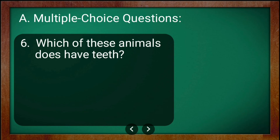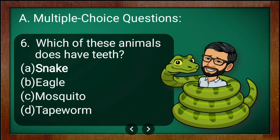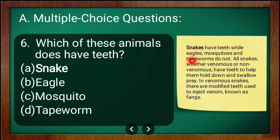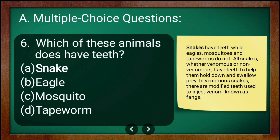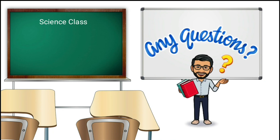The last question for today: which of these animals has teeth? The options are snake, eagle, mosquito, and tapeworm. The correct answer is snake. Snakes have teeth while eagles, mosquitoes, and tapeworms do not. All snakes, whether venomous or non-venomous, have teeth to help hold down and swallow prey. In venomous snakes, there are modified teeth used to inject venom, known as fangs.